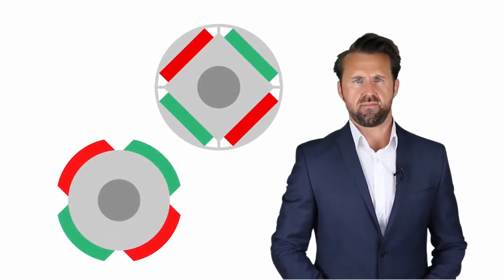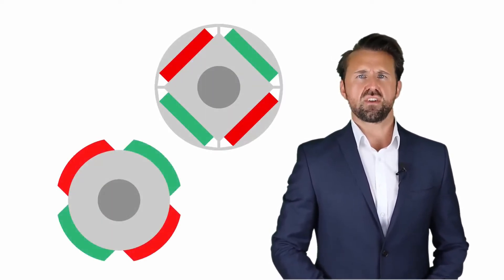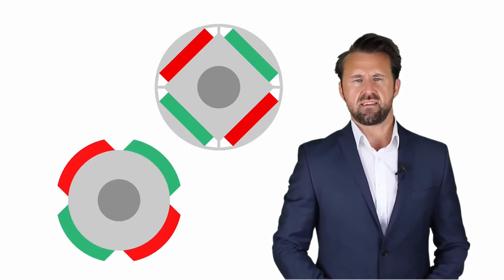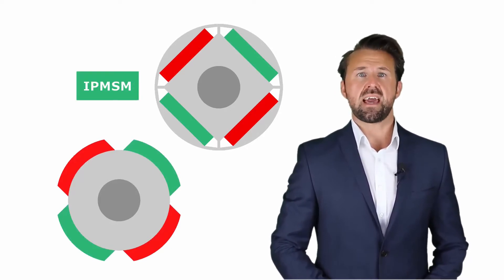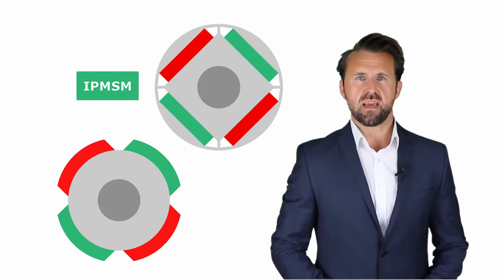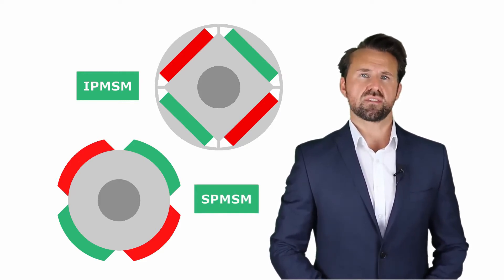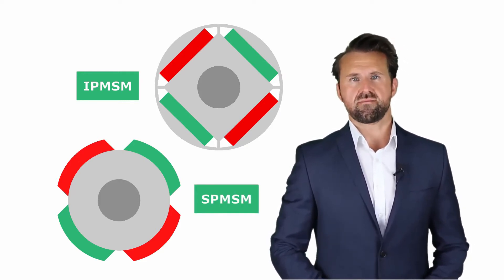Permanent Magnet Synchronous Motors can be divided into IPMSM and SPMSM. The difference is the position of the magnets — in IPMSM the magnets are embedded in the rotor, and in SPMSM the magnets are on the surface of the rotor.